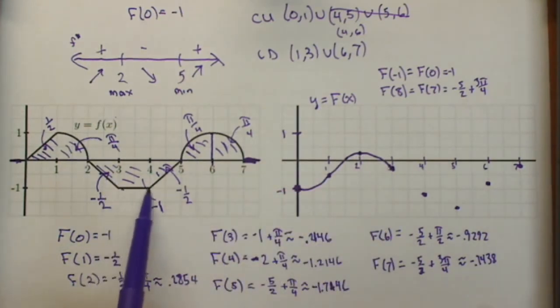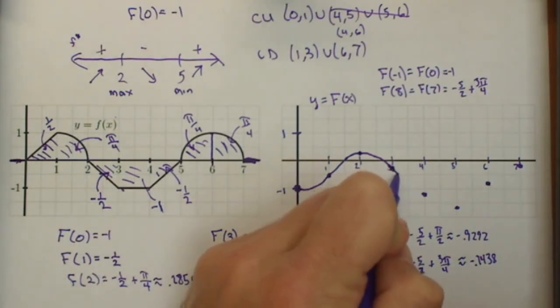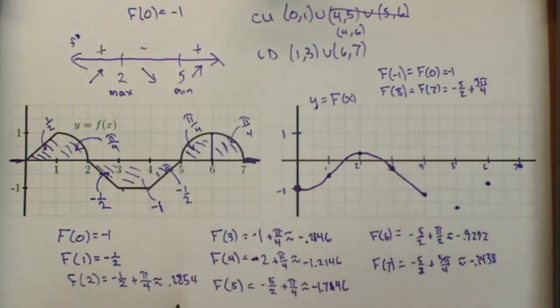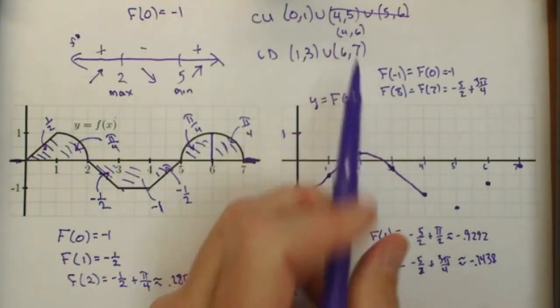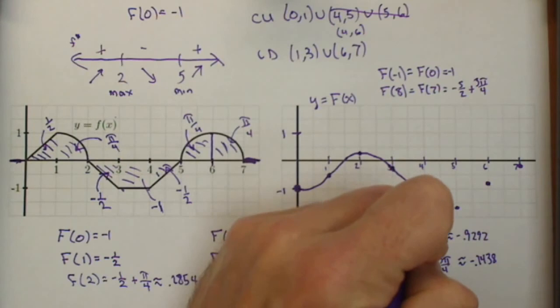From 3 to 4, that's where our derivative was horizontal. So this part here is going to be linear, nice and straight. Now we said it's also concave up from 4 to 6 with a min at 5. And we can see that now too.